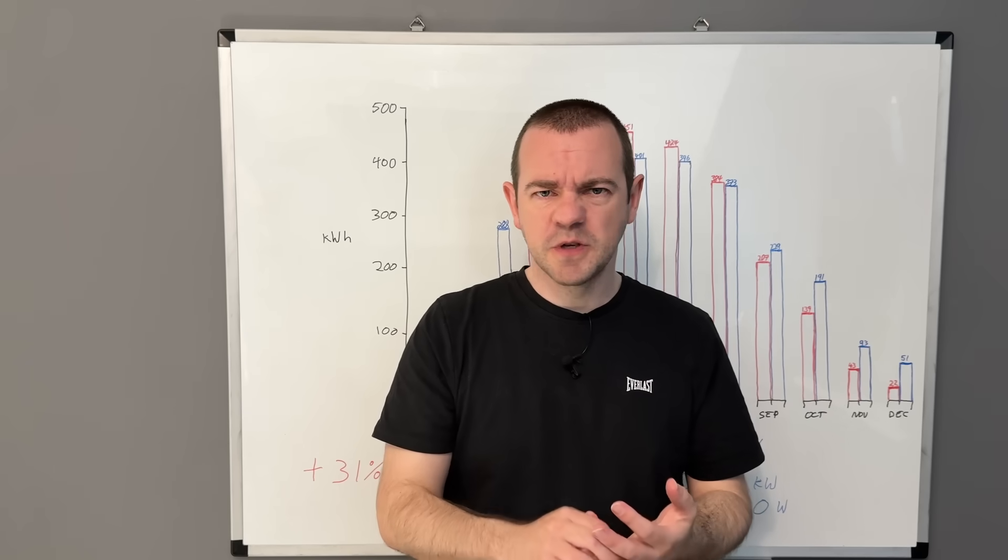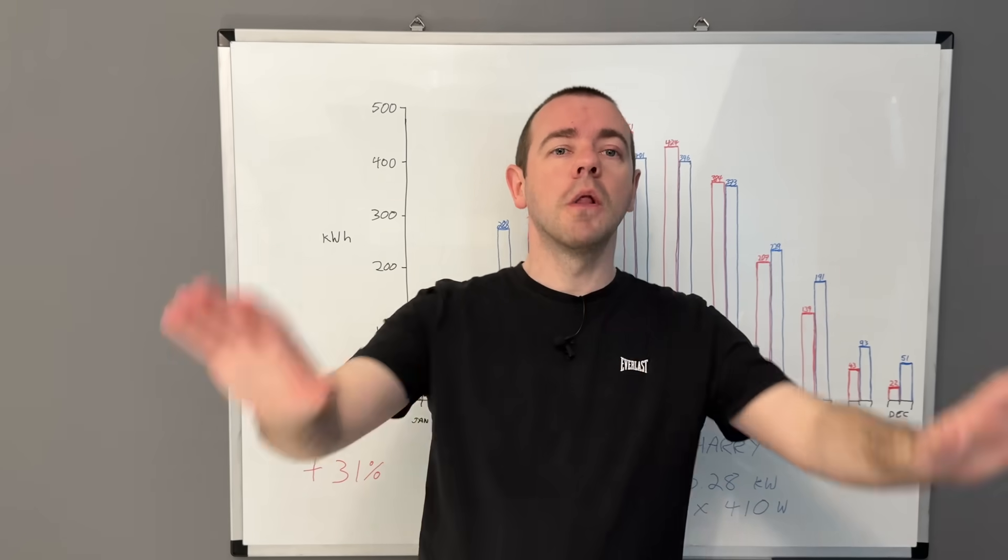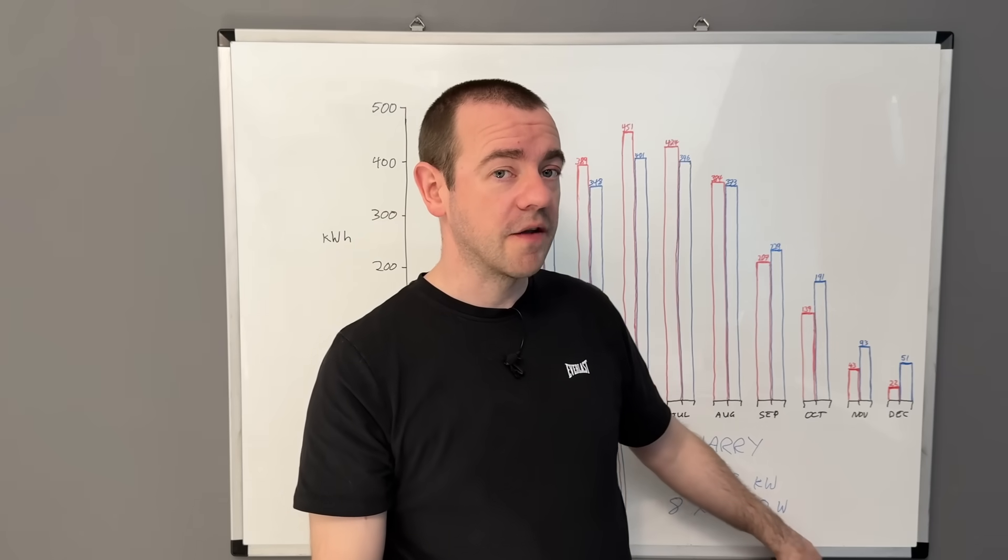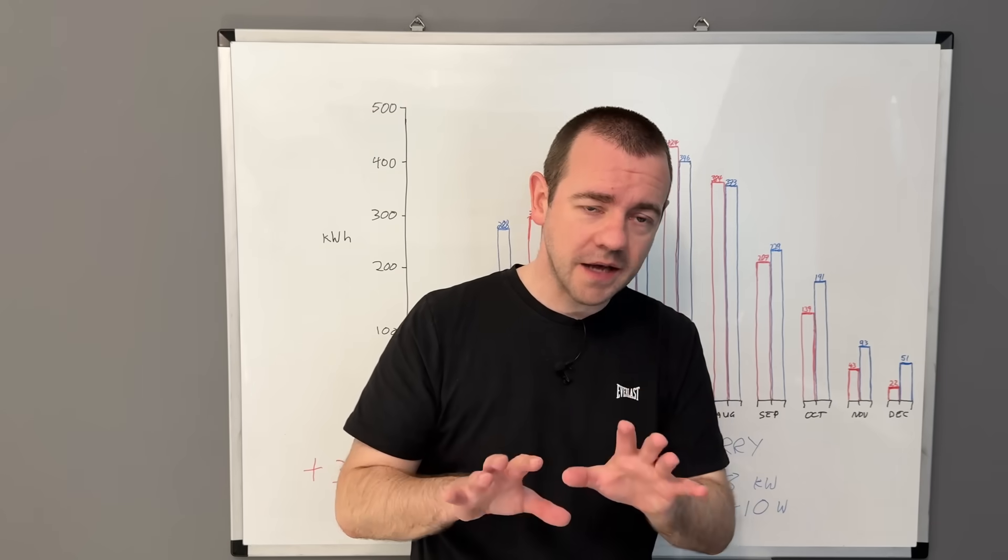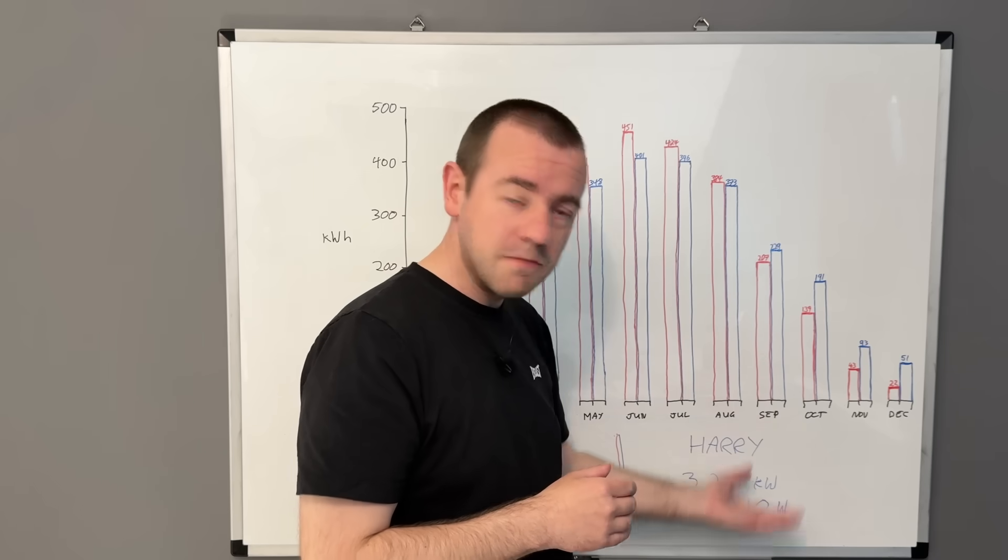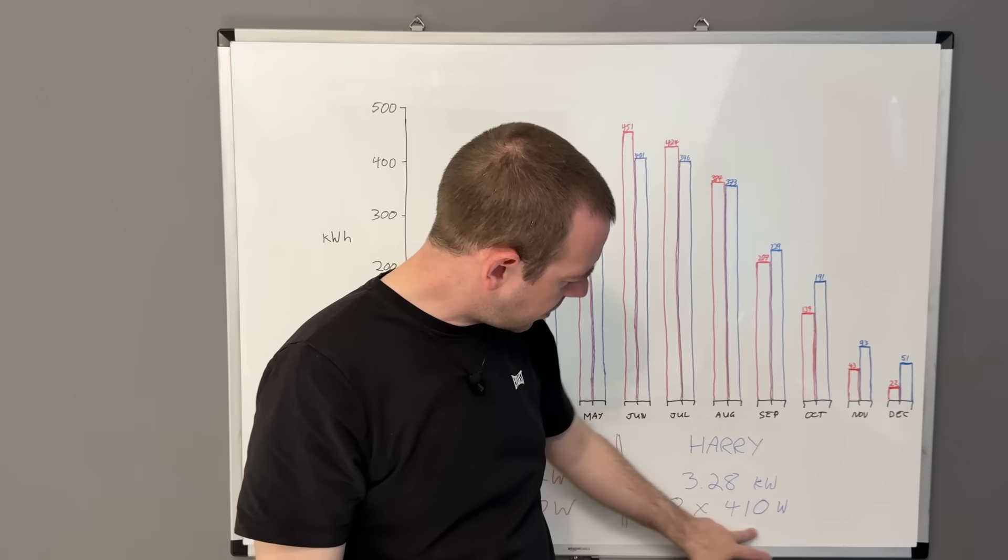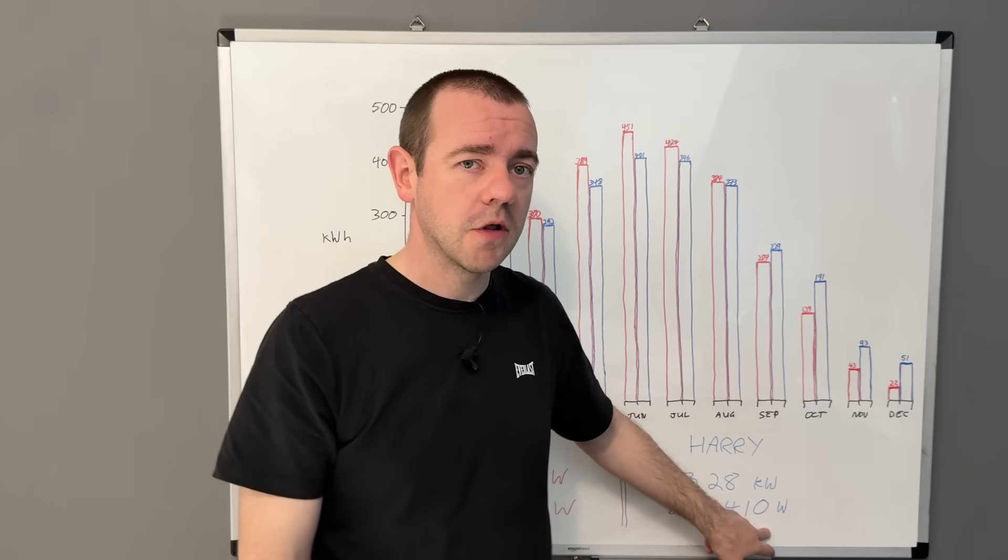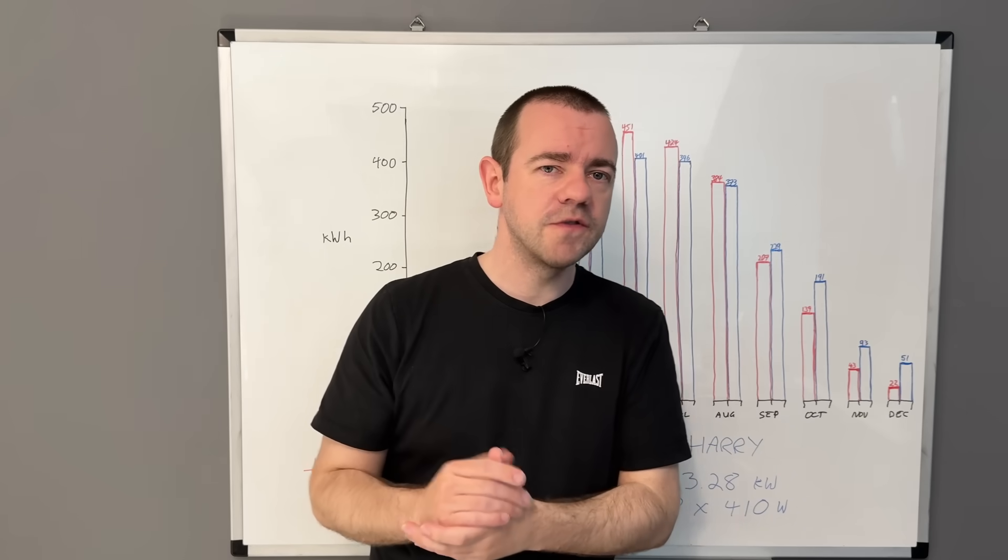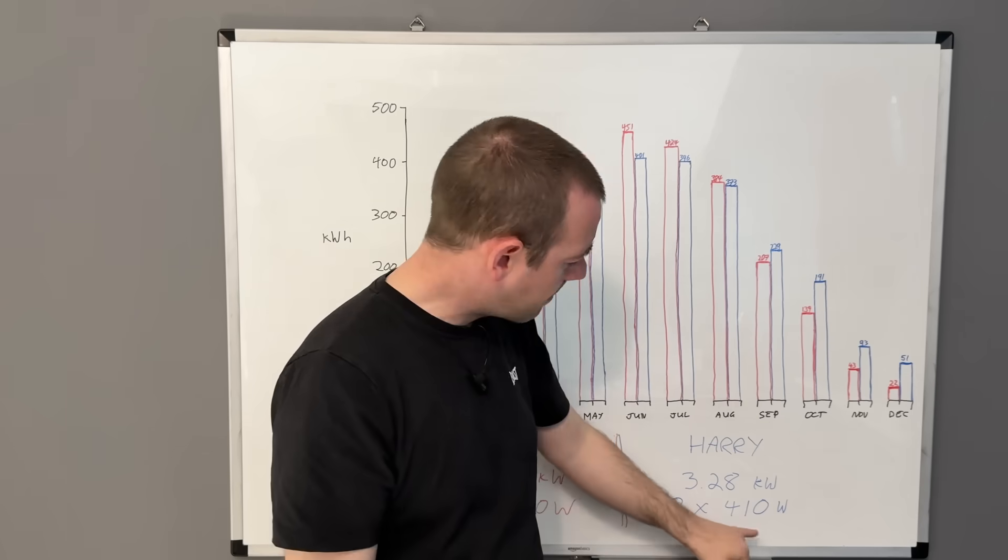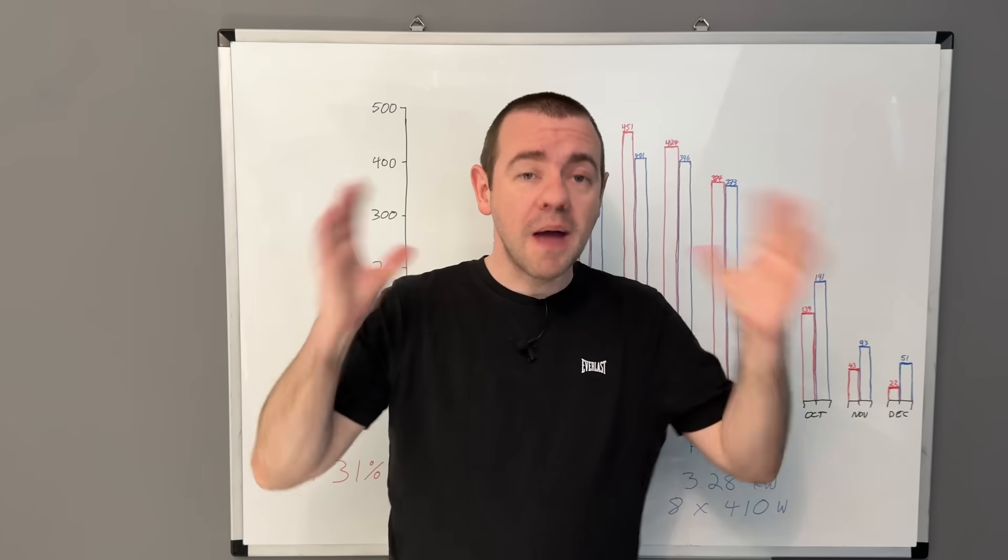What are the differences between these two microinverters? The panels he went for were 410 watt bifacial panels. One microinverter could max that panel out at 410 watts, whereas the other microinverter option would stop at 350 watts. Why would you do such a thing? What's the benefit?